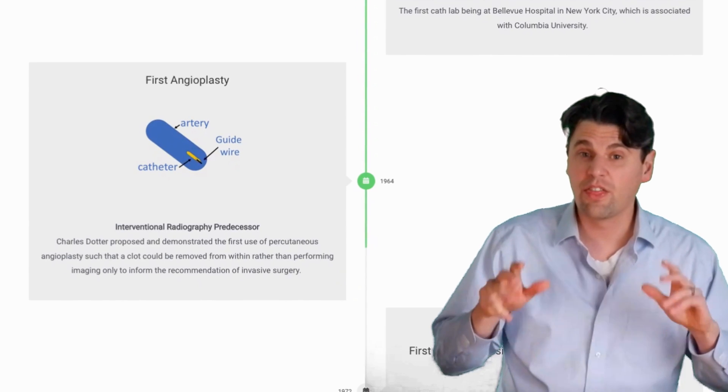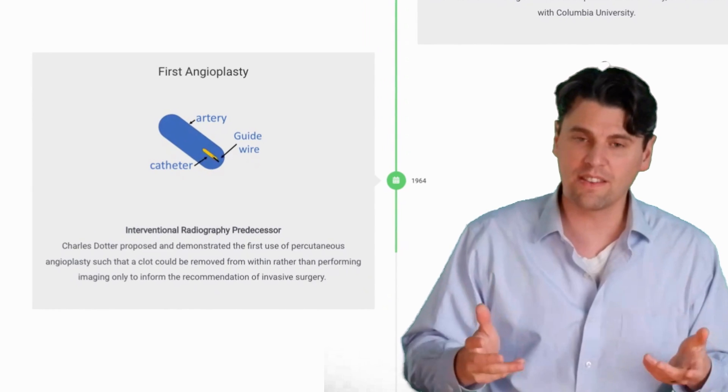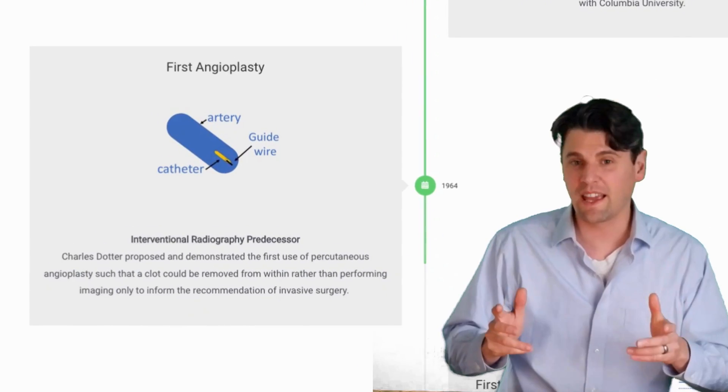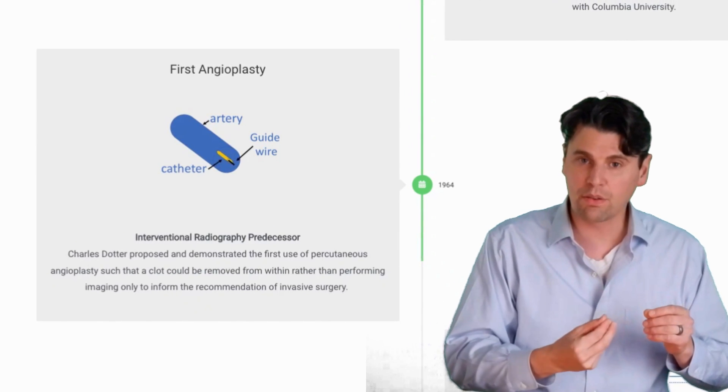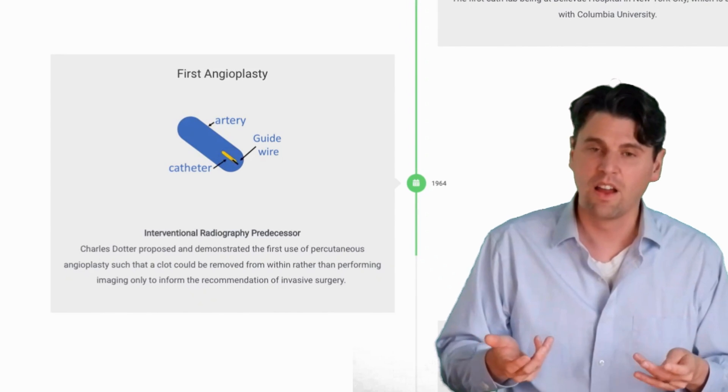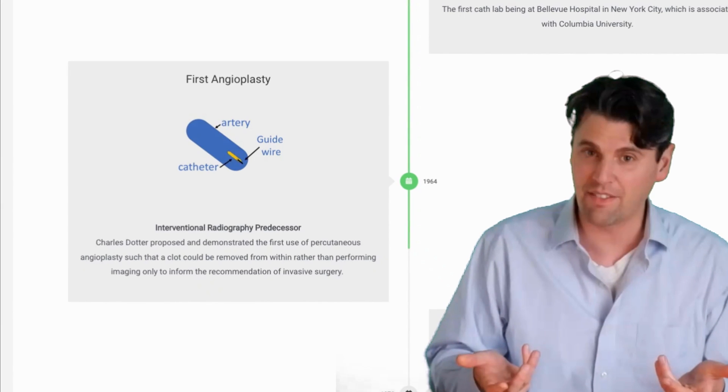In 1964, the first angioplasty was demonstrated by Charles Dodder. So this is the idea that you could come in percutaneously, use a guide wire, go down through the artery, and then you could essentially break up that clot without actually cutting the body open in order to go in and get access to that vessel.